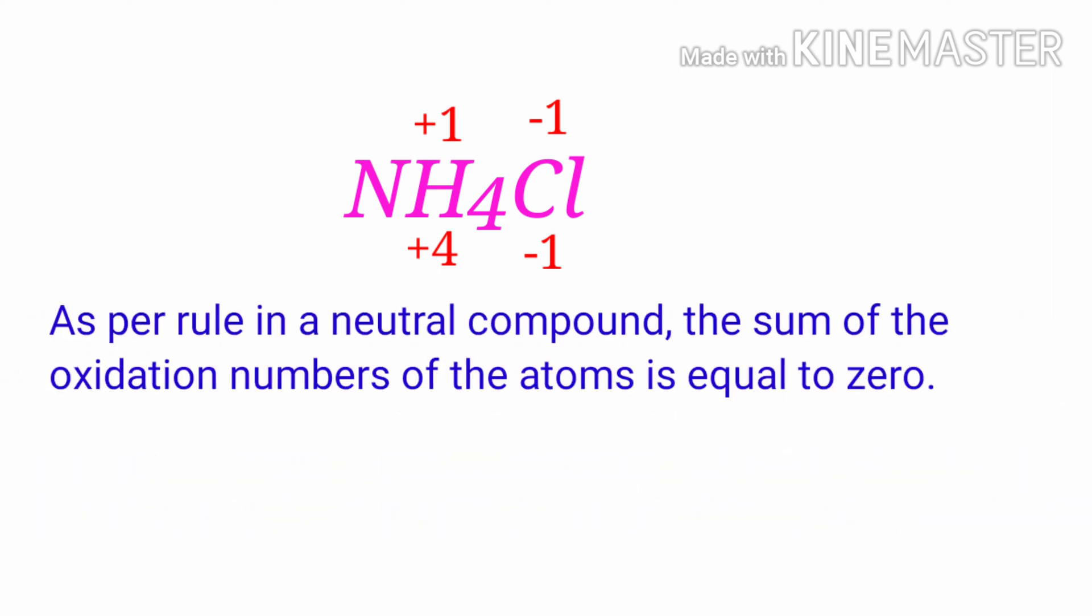As per rule, in a neutral compound, the sum of the oxidation numbers of the atoms is equal to zero. So the numbers along the bottom must add up to zero. So the number under N must be minus three. So we can write the oxidation number of nitrogen is minus three.